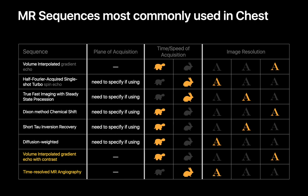Any time our protocol calls for one of the five sequences acquired as 2D acquisitions, we'll need to specify to our technologist in which planes we need: axial, coronal, and/or sagittal.